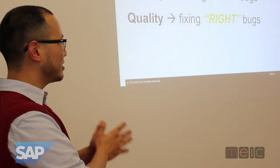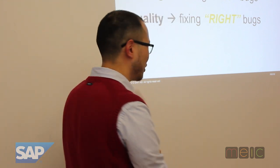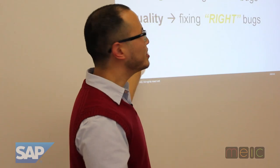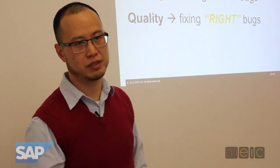I want to give you a definition of quality and testing. Testing is finding any bug — you find it, jot it down, put it in some system. If you didn't write it down, it didn't exist. Testing is finding any bug, and you jot it down.